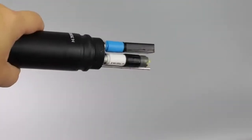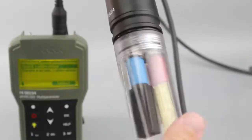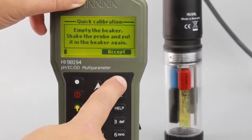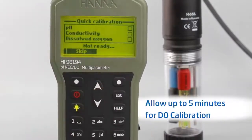Then, shake any remaining liquid off the probe. No droplets should remain on the DO sensor tip. Screw the empty calibration beaker back onto the probe body. Press accept and then press confirm to finish calibration.